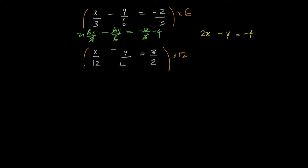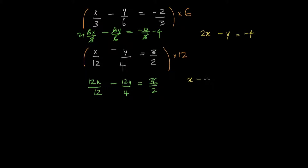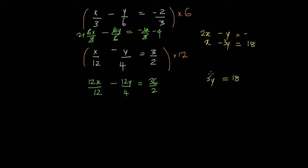And we do the same thing for the second equation. We're going to multiply all the terms by 12, so that becomes 12x over 12 minus 12y over 4 equals 36 over 2. And when I do that, the 12s cancel out, so I'm left with x minus 3y equals 18. So these are my two equations. Now we can use elimination.